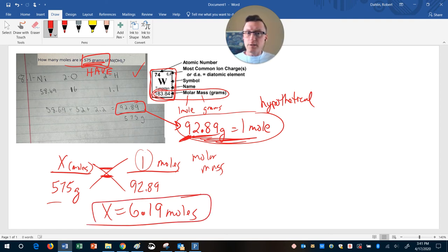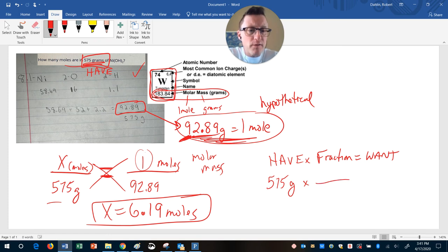If proportions aren't working for you, you can do it as a conversion, like what you were taught in physics last year. In physics, you can always say, okay, take what you have. You're going to multiply it by your conversion fraction to get what the question wants you to solve for. It's actually the same setup. It's just in a different format. So the have, again, is the number that you have from this question, 575 grams. The fraction, I'm going to leave blank for now. What we want when we're done is moles because the question asks how many moles, right?